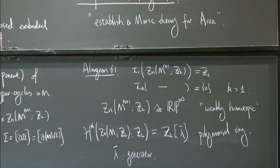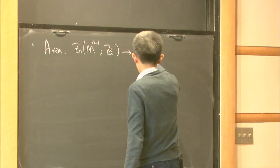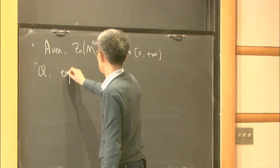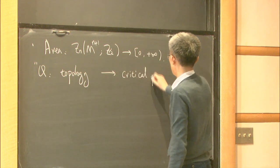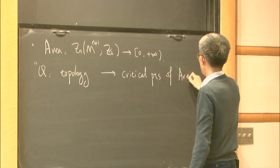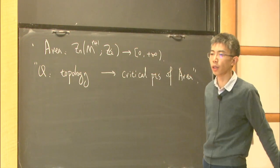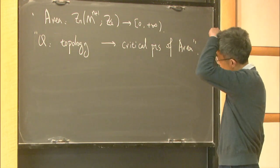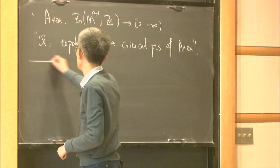This is a fruitful structure. It's very natural to think about the area functional being defined over this space. A rough question is: can we use the topology here to give a critical point of the area functional, which would be minimal surfaces? If successful, since we have so much topology, we would produce at least infinitely many minimal hypersurfaces. That's the basic idea based on the topology.